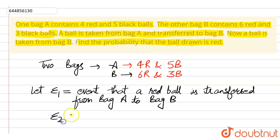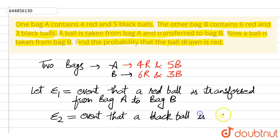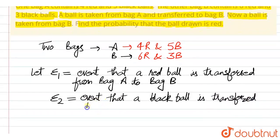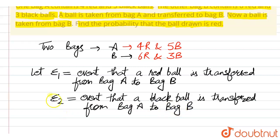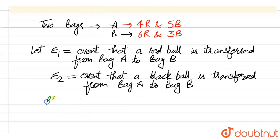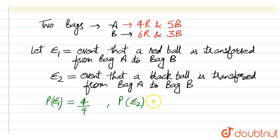Similarly, we define event E2 as the event that a black ball is transferred from bag A to bag B. In bag A we have four red and five black balls, so probability of event E1 — taking a red ball — is 4 by 9, since total balls are nine. And probability of event E2 — selecting a black ball — is 5 by 9.